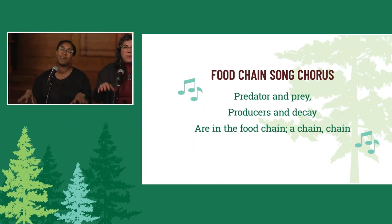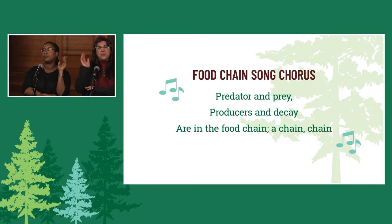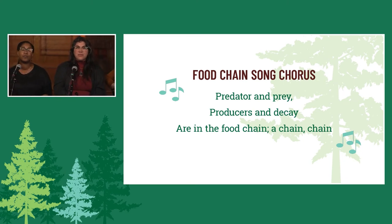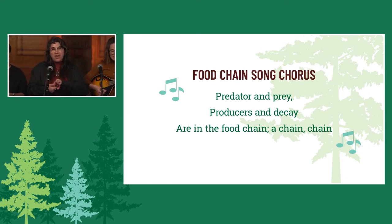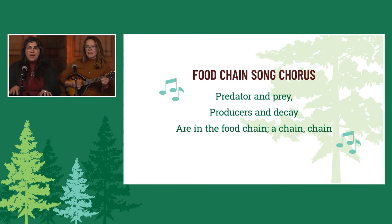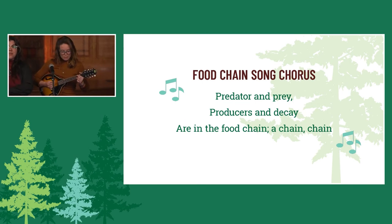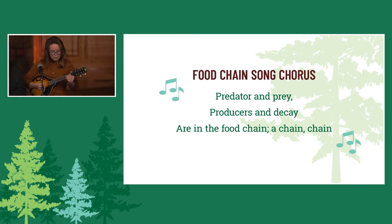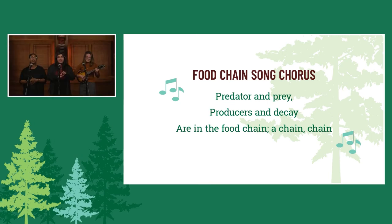Everybody now: predators and prey, producers, and decay are in the food chain — a chain, chain. Predators and prey, producers, and decay are in the food chain — a chain, chain. The cycle never ends, it just begins again in the food chain — a chain, chain. So eat your food, my friends, but remember where it's been in the food chain — a chain, chain.